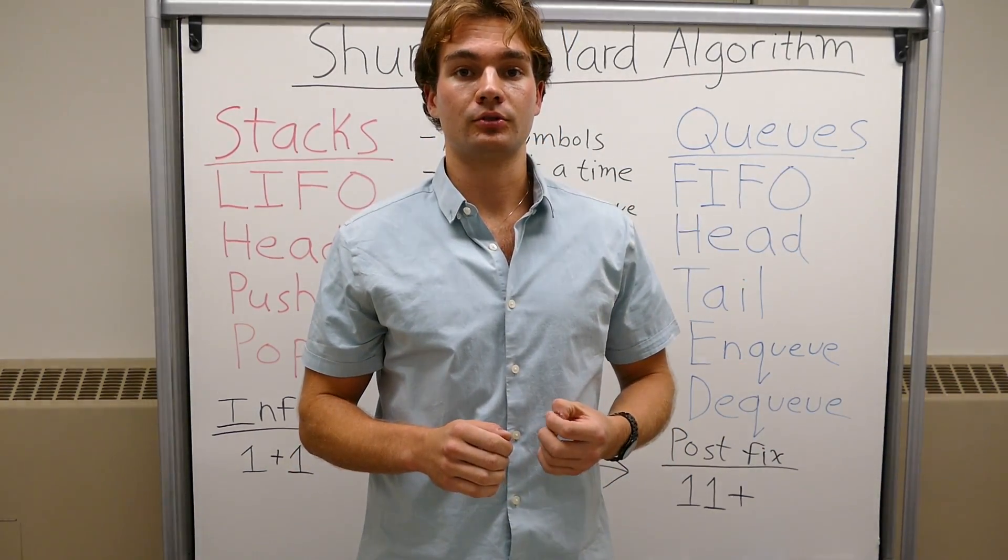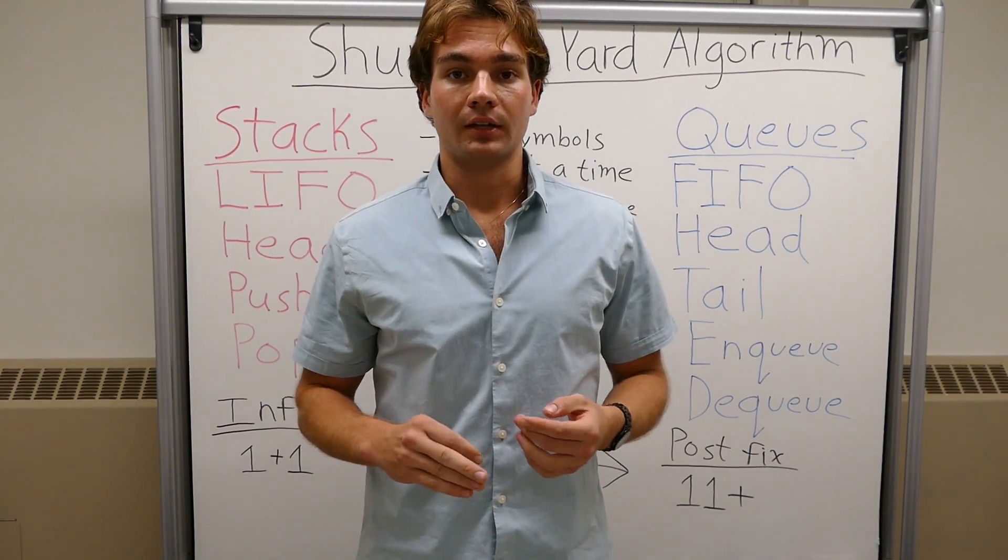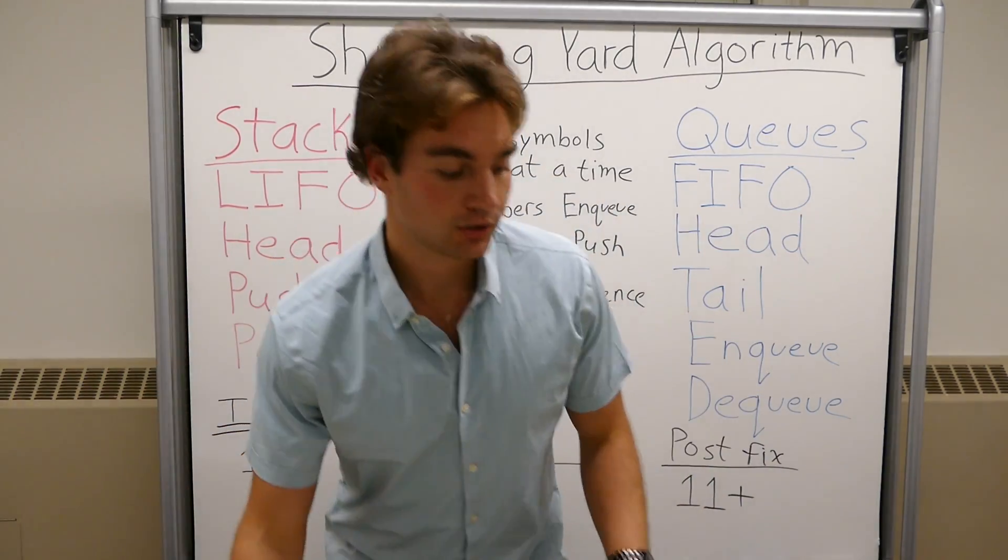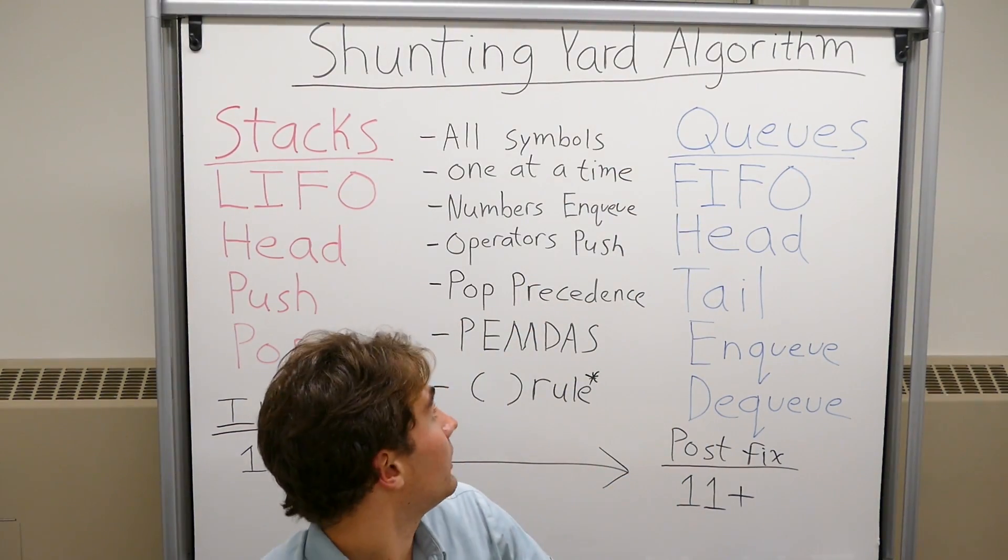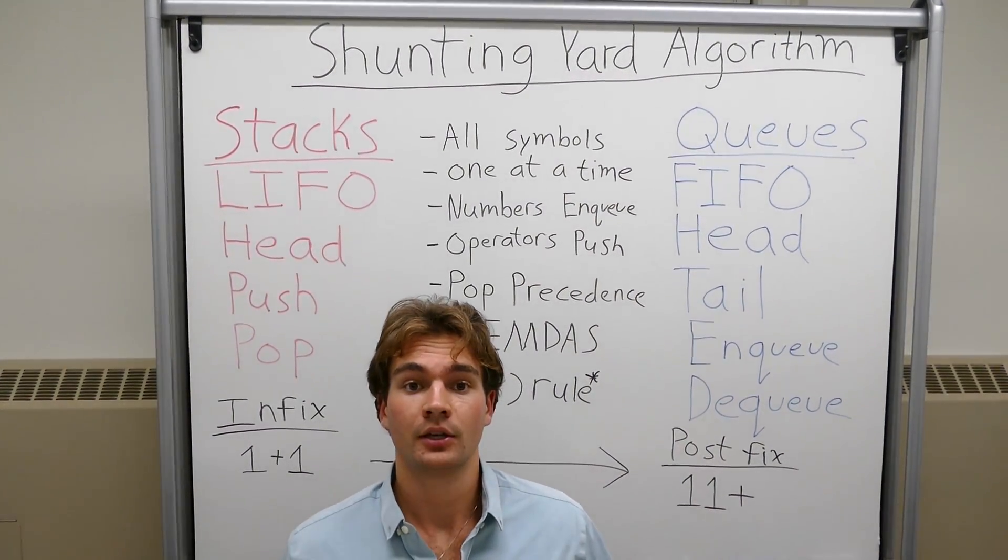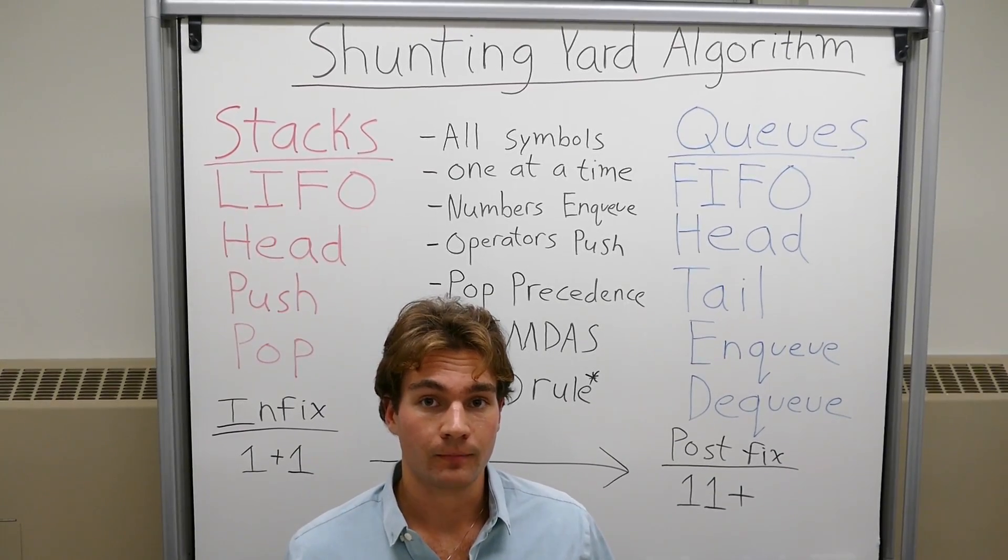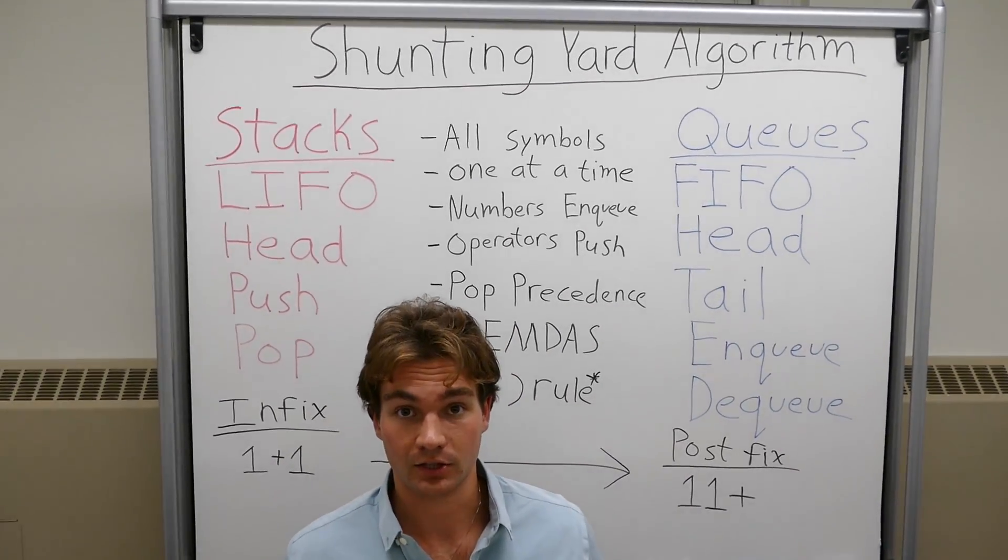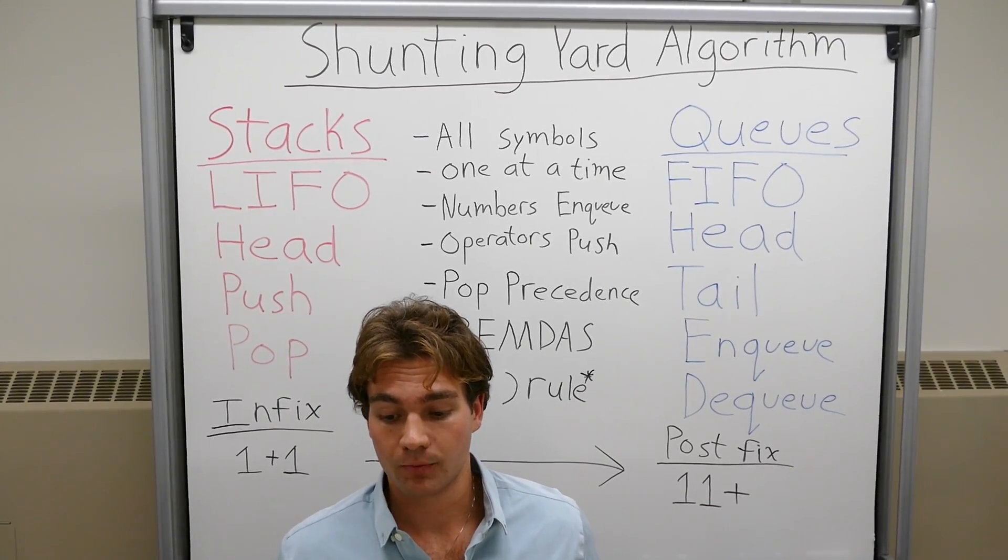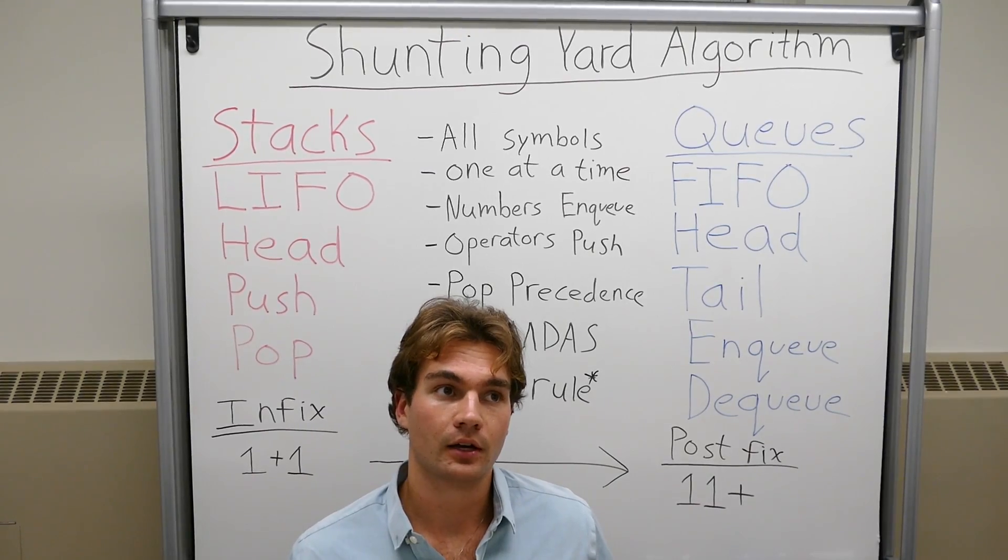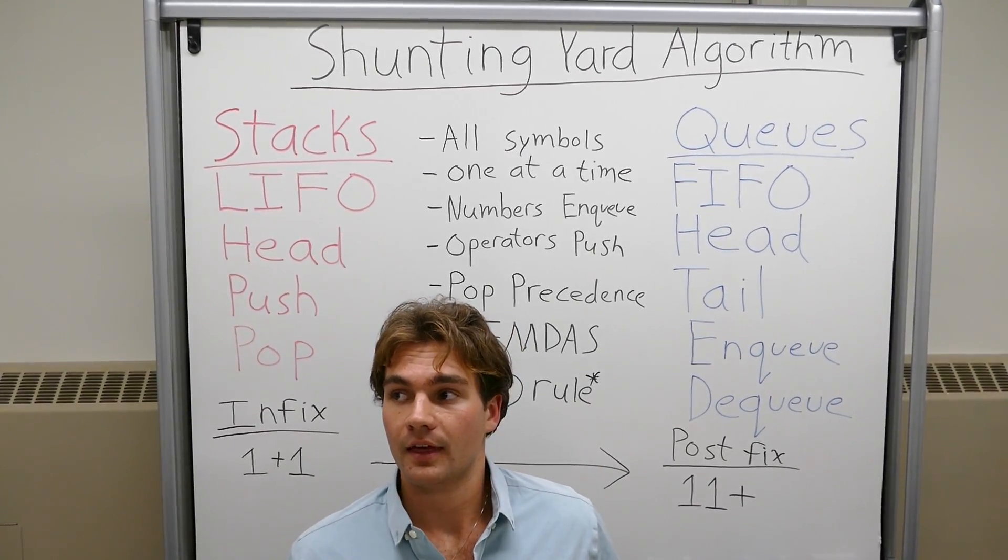Let's get started. We're going to go through some key things of the shunting yard algorithm. You need to process all the symbols one at a time. Anytime you see a number, you're going to enqueue it. Anytime you see an operator, you're going to push it onto the stack. However, every time you pop, you're going to keep track of precedence.